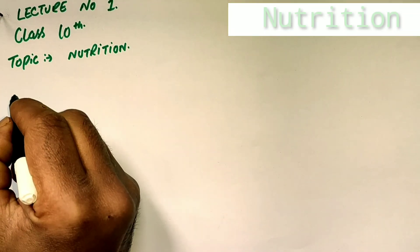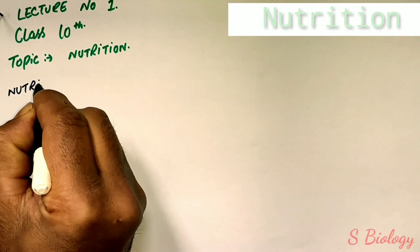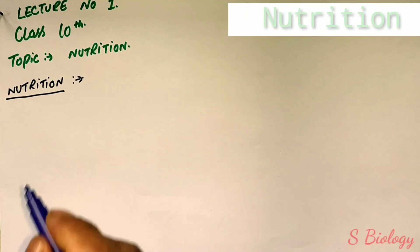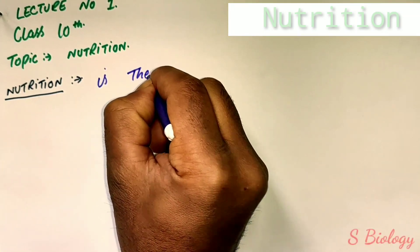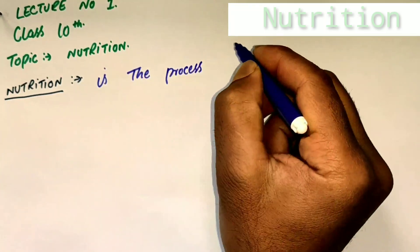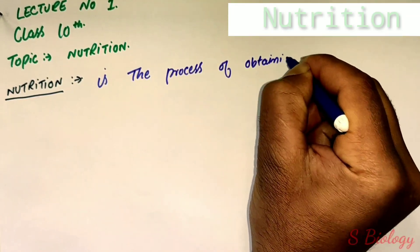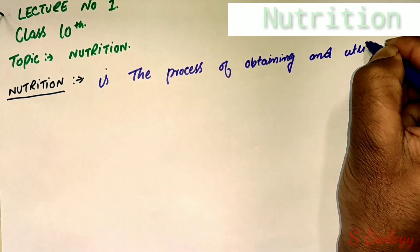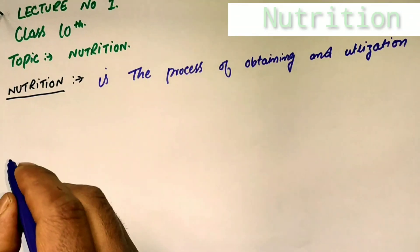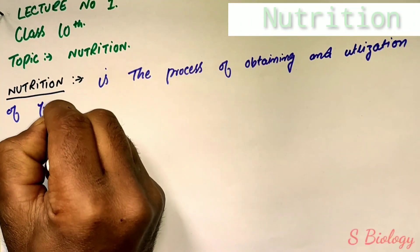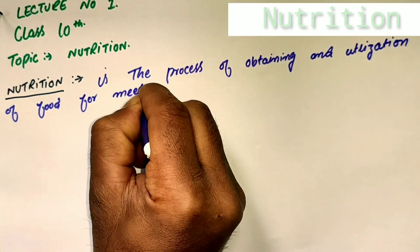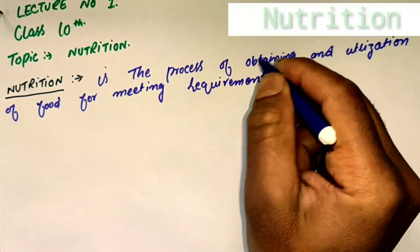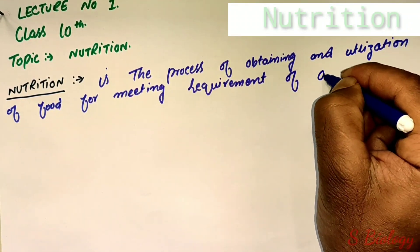Welcome to my YouTube channel. This is a class 10th topic on nutrition. Nutrition is the process of obtaining and utilization of food for meeting various requirements of living beings. Food is the material substance used by living organisms for obtaining energy and raw materials to produce biochemicals required by our body, such as repair, growth, development, and regulation. The different components of food are both organic and inorganic and are called nutrients.